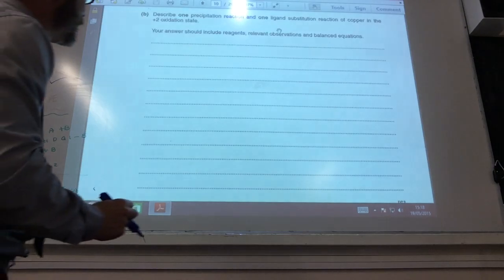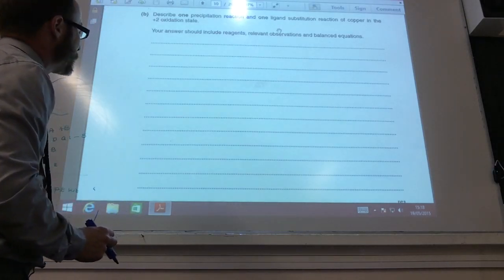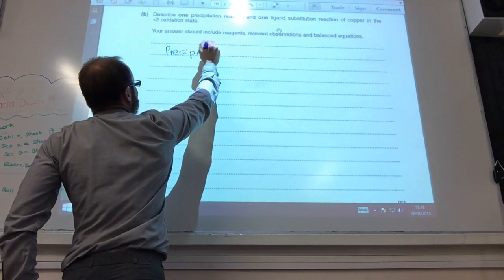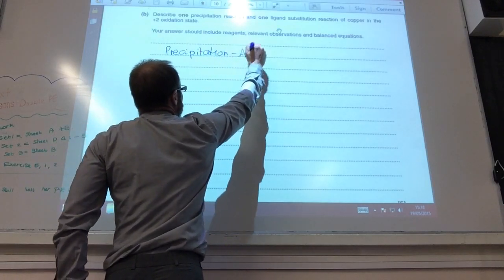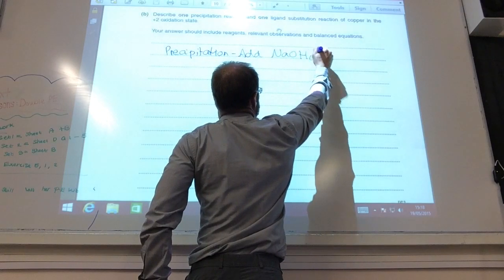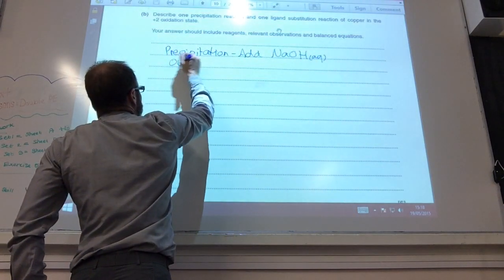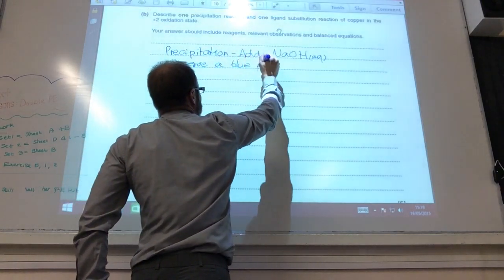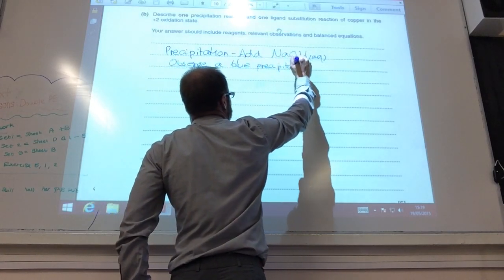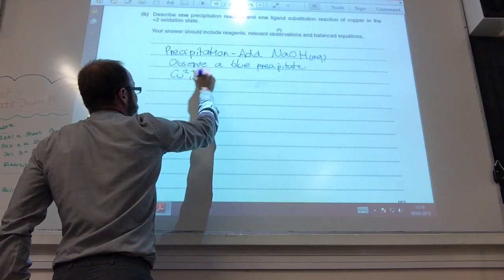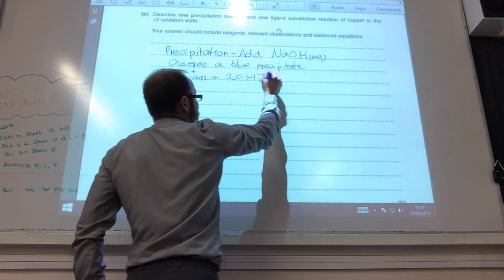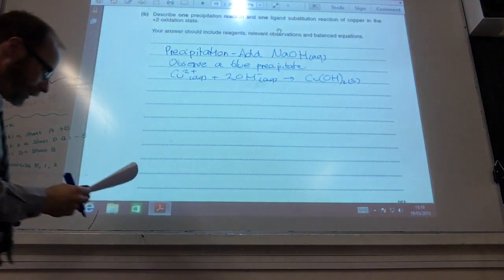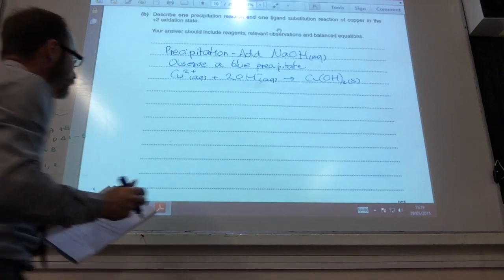Alright, so now this is a question, tell me all that you know about copper chemistry, and it wants me to talk about precipitation and ligand substitution. So let's do precipitation first. For that, we would add sodium hydroxide solution. You would observe a blue precipitate, and the equation would be Cu2+ aqueous plus 2OH- aqueous goes to copper hydroxide-2 solid. And that's pretty much your three marks.